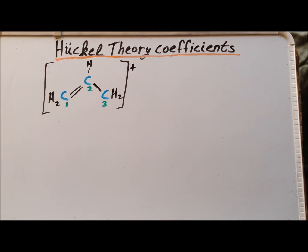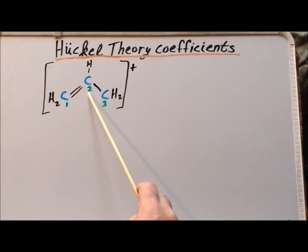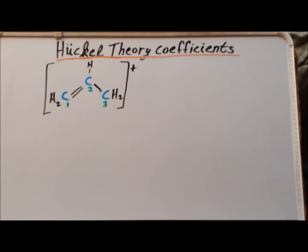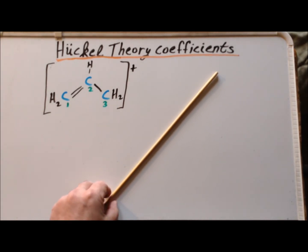For later ease of reference, we number the carbons with a green number: carbon 1, 2, and carbon 3. For the sake of brevity, this video is going to assume that you have already seen the previous video showing how to set up the secular determinants for this particular system in simple Hückel theory and how to derive the eigenvalues. If you have not seen that video, you can find it right here.